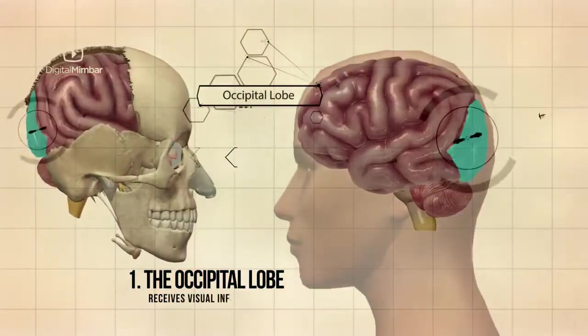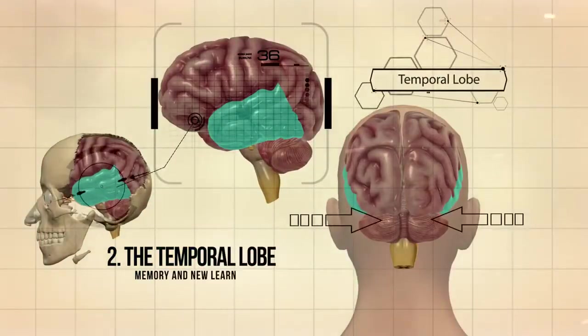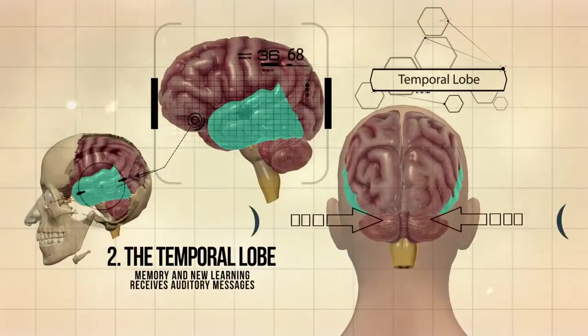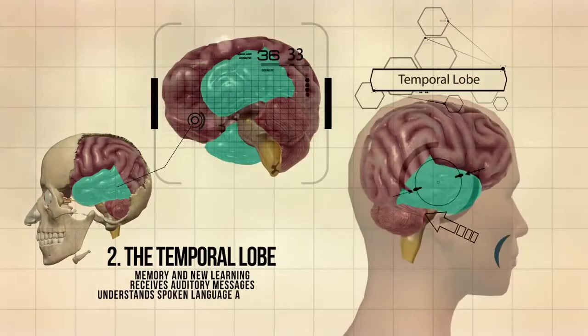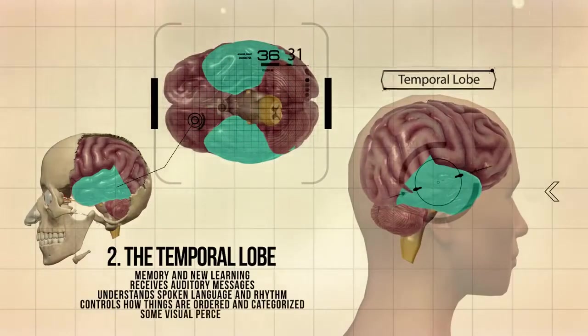The occipital lobe receives visual information, interprets color, shape and distance. The temporal lobe is responsible for memory and new learning, receives auditory messages, understands spoken language and rhythm, controls how things are ordered and categorized, and handles some visual perception.